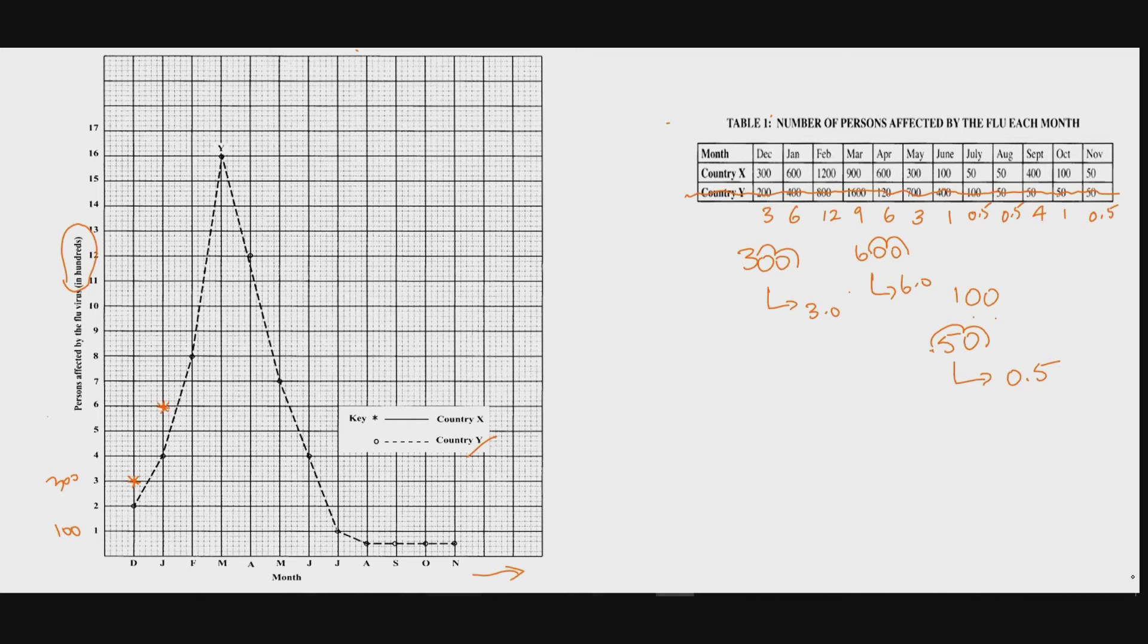February is twelve hundred, which on the graph will be equivalent to twelve. So, we keep going up, up, up, up to twelve. And we plot our point. The next is March. March is nine hundred, which will be nine on the graph. There we go. And I'll just continue, up to June. So, March is nine. April is six. May is three hundred, back down.